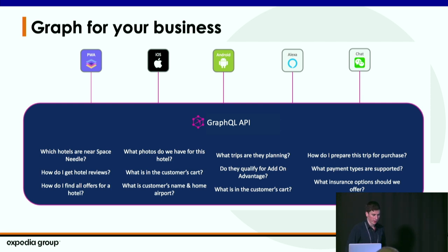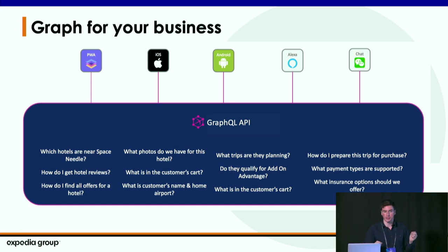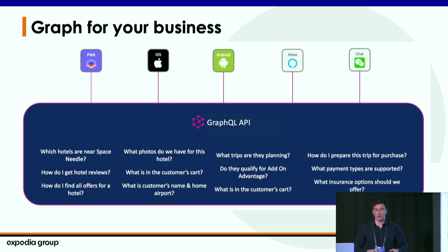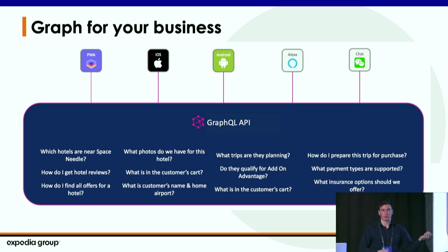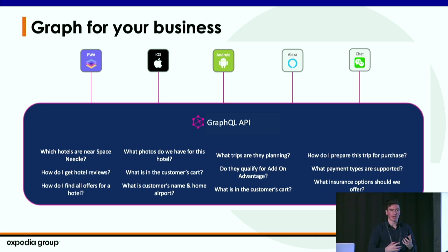For us, GraphQL has not just been a way to standardize the data — it's been a way to standardize our business. No longer is the question 'the hotels team has this API with this data and this UI.' Now it's: I have this graph and I want to answer the questions that the traveler has. Like, what hotels are available near the Space Needle? What hotels are available in the customer's cart? These are just questions your travelers need answered, and it should be up to the graph to answer them — regardless of how you change the services underneath.